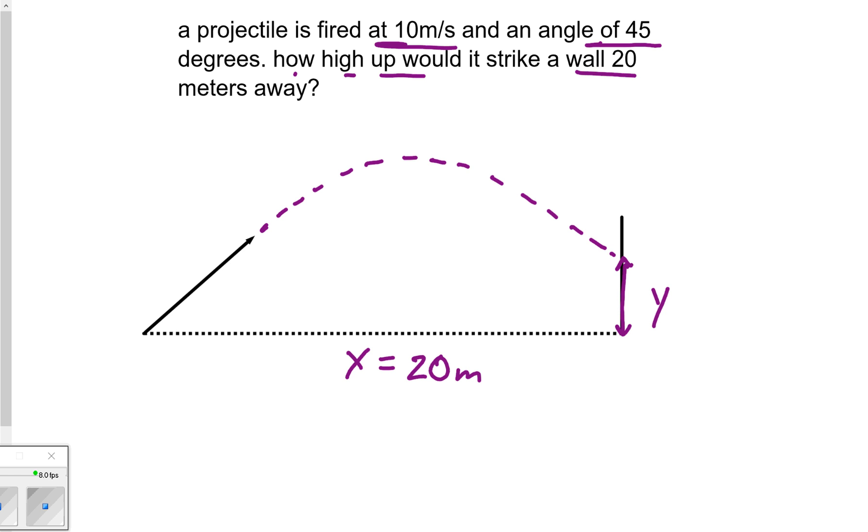We're trying to figure out how high up the wall it strikes. It tells us something very handy: the initial velocity. Let me switch to red. It tells us the initial velocity of the projectile is 10 meters per second. It also tells us that the projectile is shot at an angle of 45 degrees.